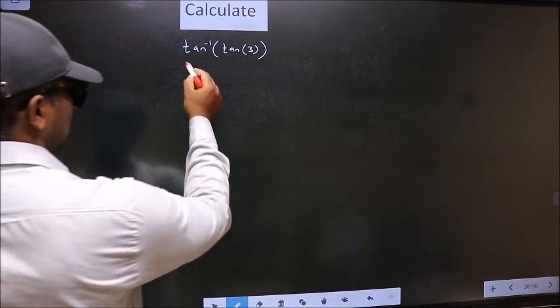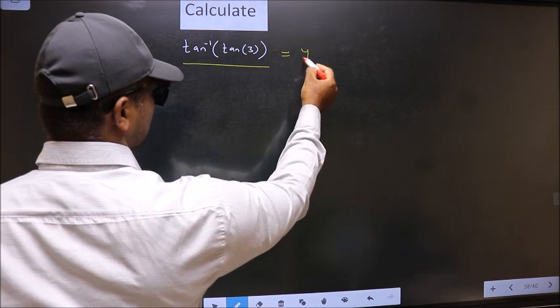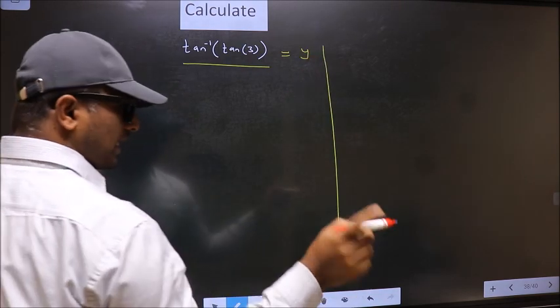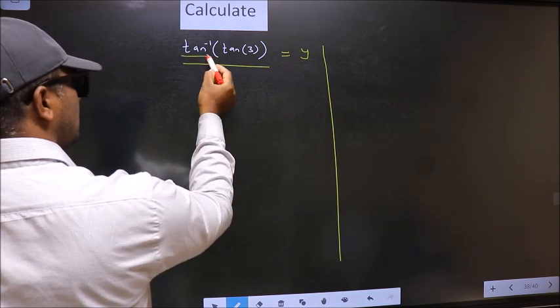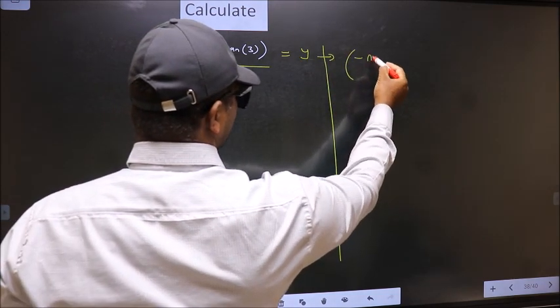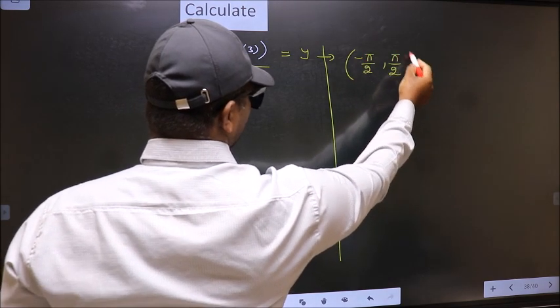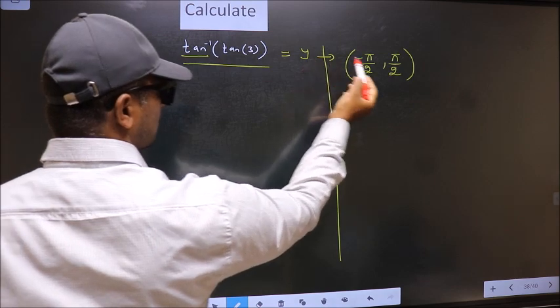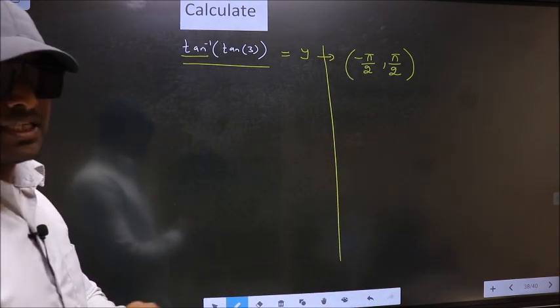We should get the answer to this one. Let us take the answer to be y, and the condition is y should lie in the range of tan inverse, which is minus pi by 2 to plus pi by 2. Our answer should lie in this interval.